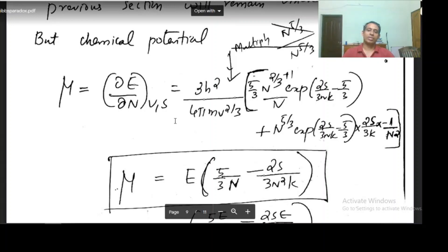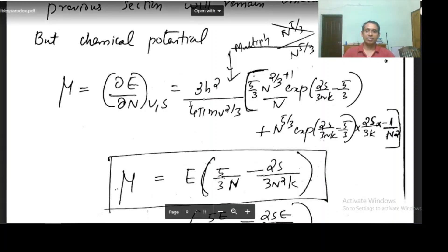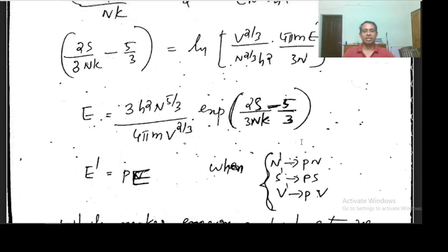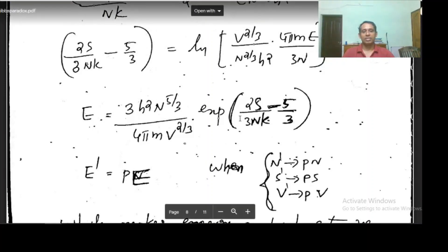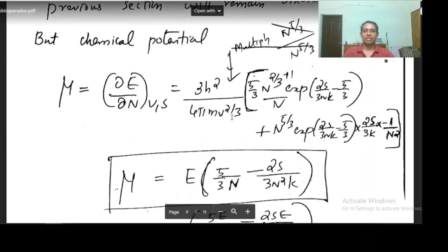Mu is ∂E/∂n when volume and entropy are constant. I have to differentiate the energy expression with respect to n. Here n is present in two places, so we have to apply the product rule. As I differentiate by applying the product rule, I will get this expression.